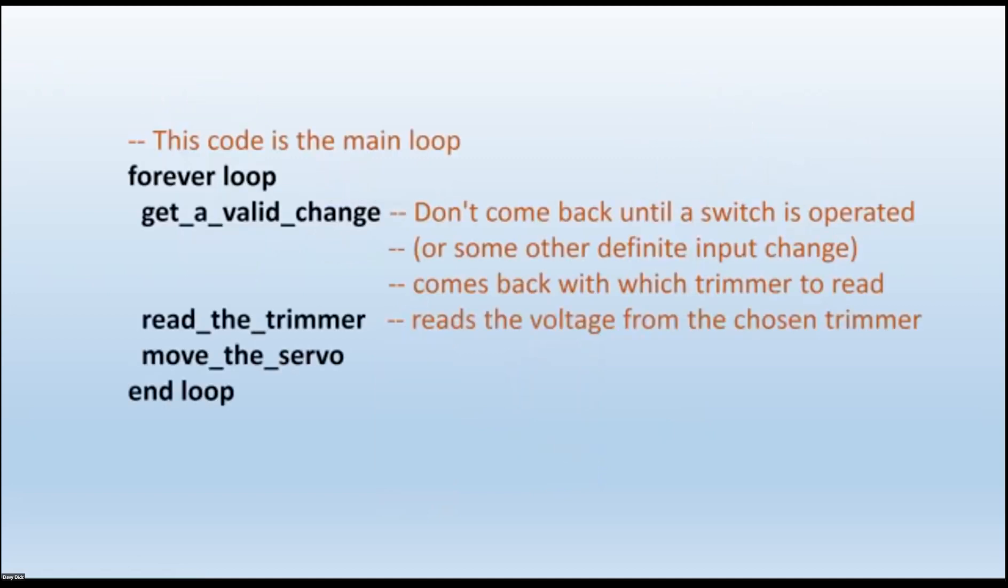So now we know that the main loop is very similar. Get a valid change. You'll wait until somebody throws a switch, or it could be an input from EasyBus or something else, C-Bus or whatever, or some other logic, but in this case we're using a switch. So you wait until you get a valid change, and then you read the appropriate trimmer. So you're going to read either Trimmer 1 or Trimmer 2 or Trimmer 3, depending on which way you've thrown the switch, and then move the servo to that appropriate position. Simple as that. Wait for a switch change, read the appropriate trimmer, and then move the servo to that position.